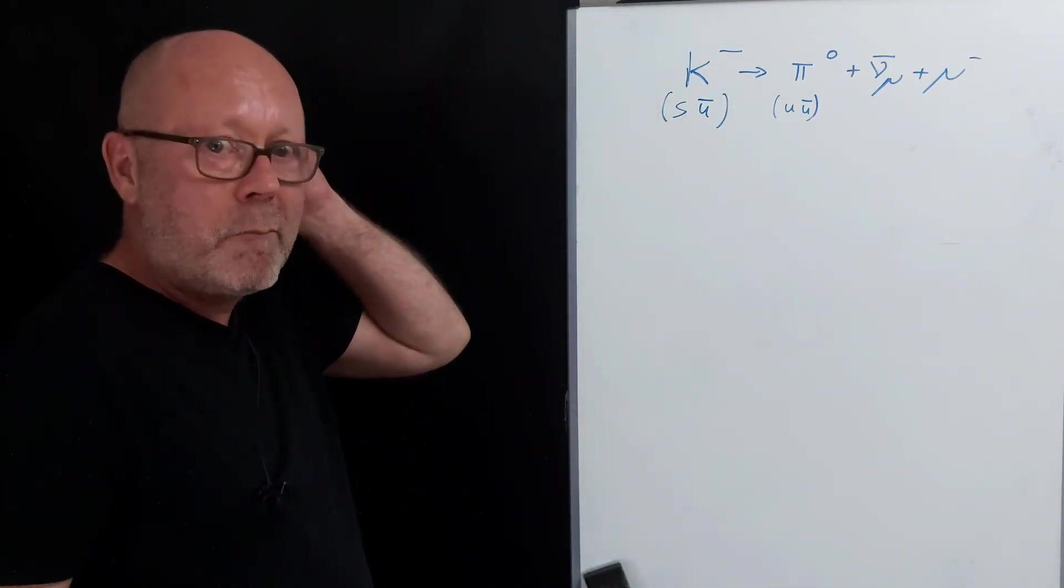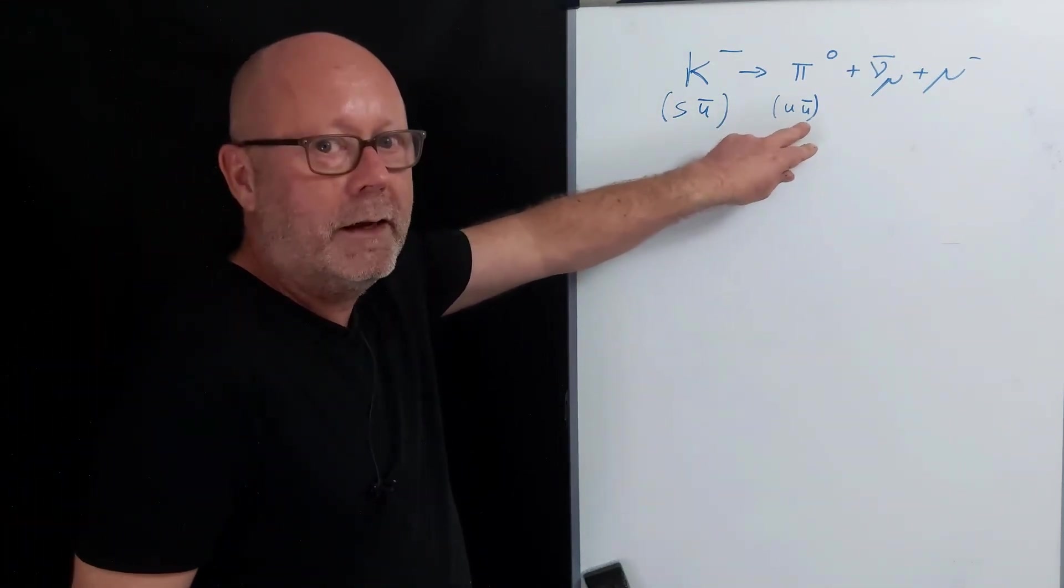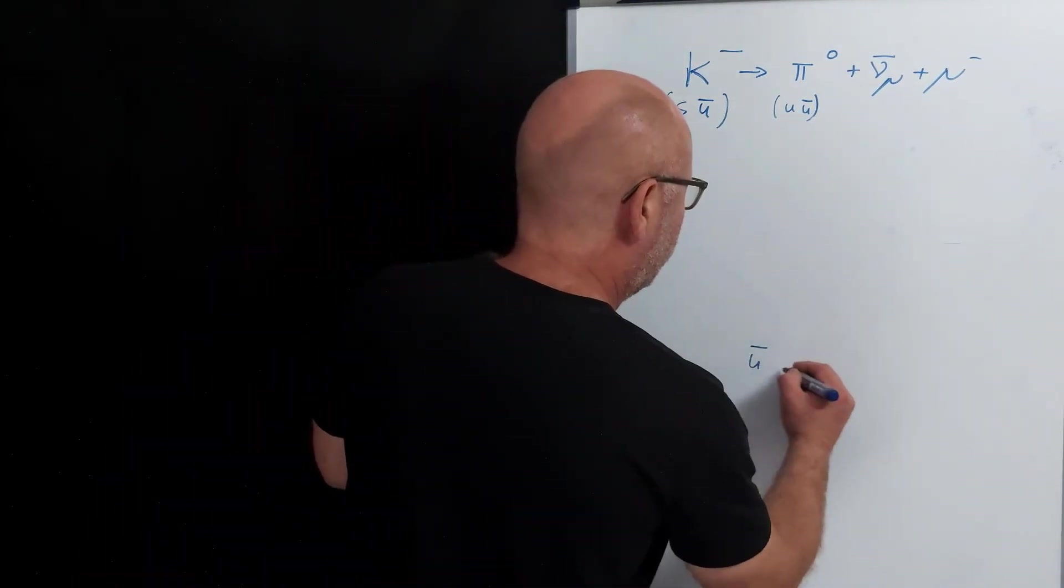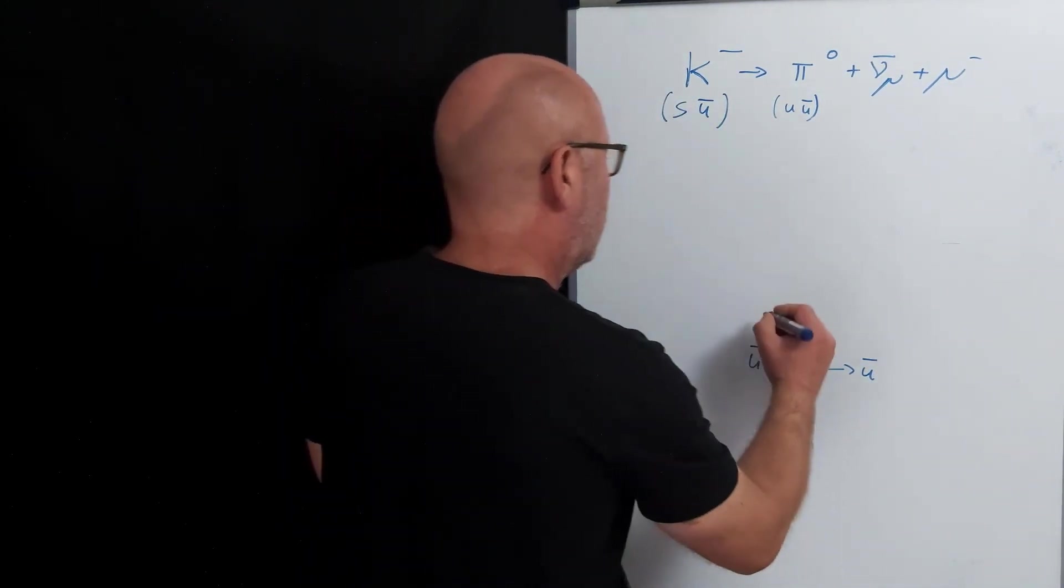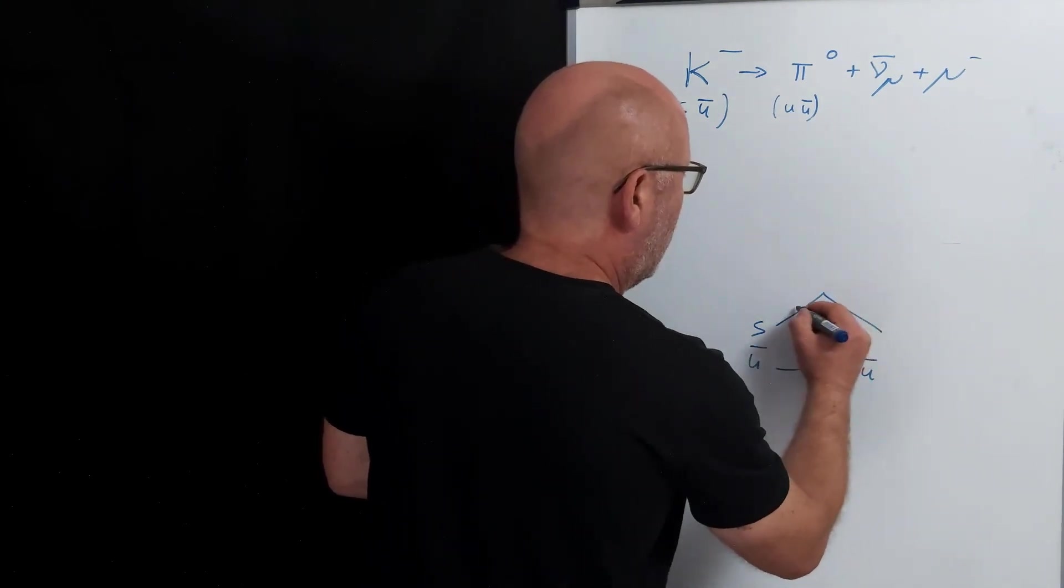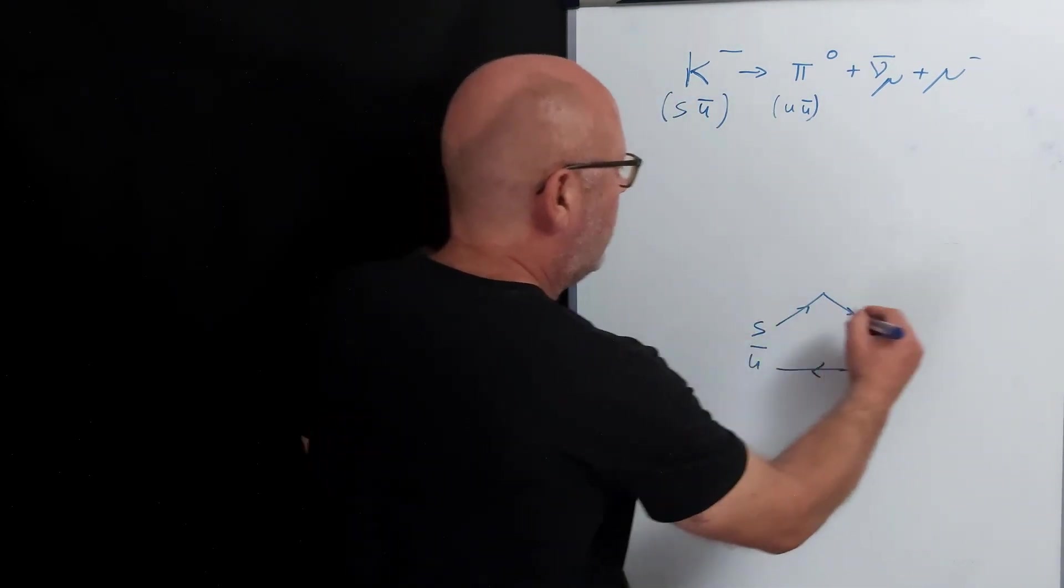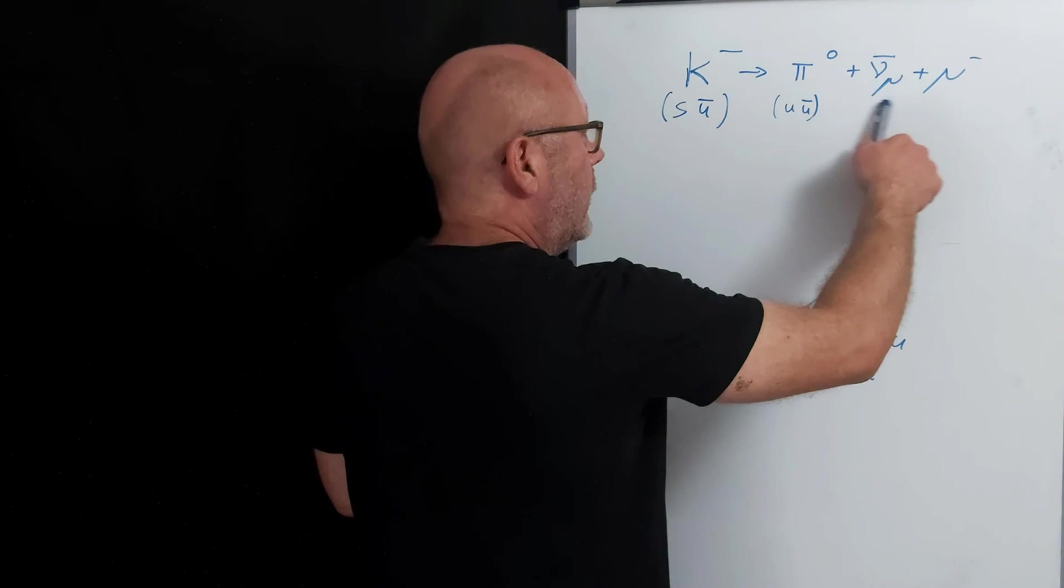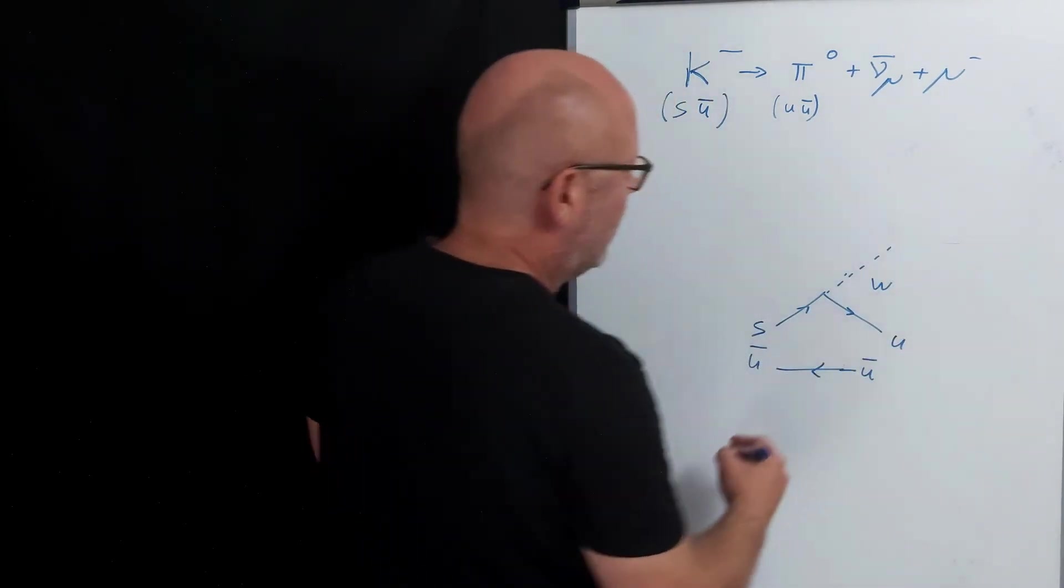I want to draw the Feynman diagram of this thing. So my thought is to see that I have the anti-ups which are still there, right, before and after. So the anti-up is going to stay as it is. And then I want my strange to become an up. Actually, the anti-up should be written like this. My strange becomes an up to conserve the baryon number. I know it's a weak force involved here because I have the leptons. And it's going to be a W.